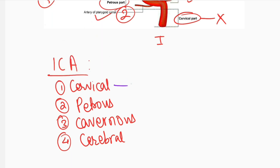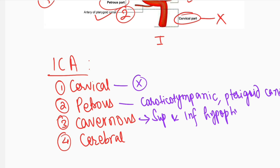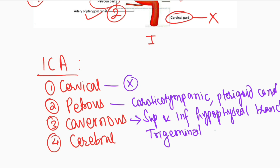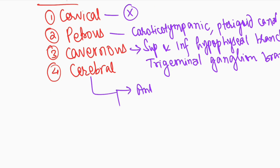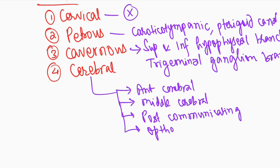To recap: the cervical part has no branch. The petrous part has the caroticotympanic branch and the pterygoid canal branch. The cavernous part has the superior hypophyseal branch, inferior hypophyseal branch, and trigeminal ganglion branch. The cerebral part has five branches: the anterior cerebral branch, middle cerebral branch, posterior communicating branch, ophthalmic branch, and anterior choroidal artery.